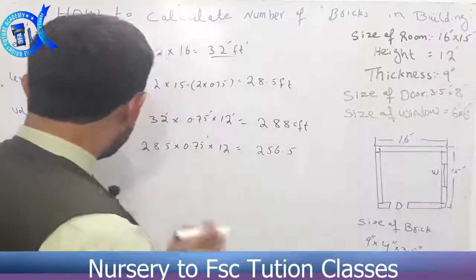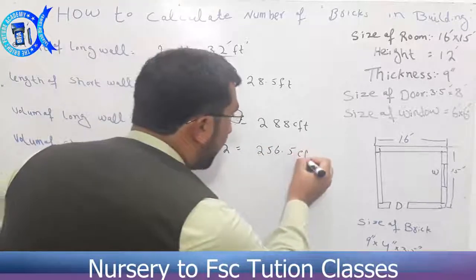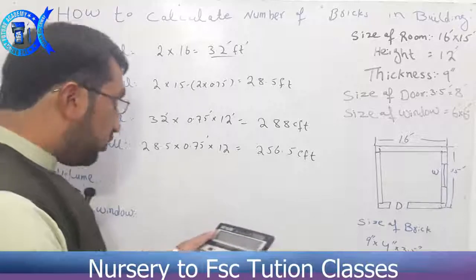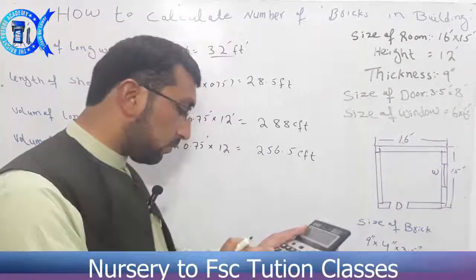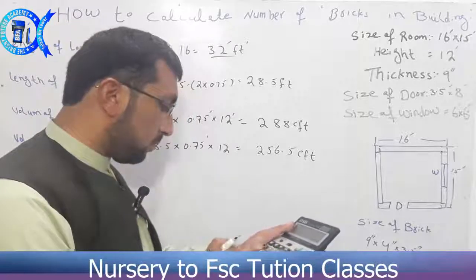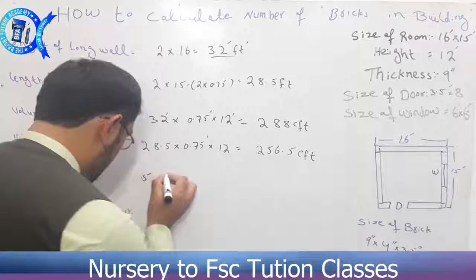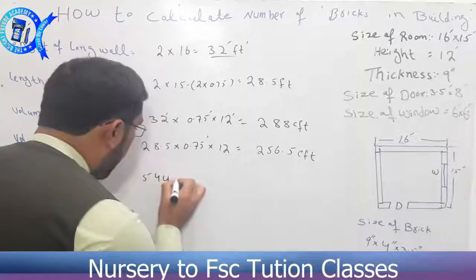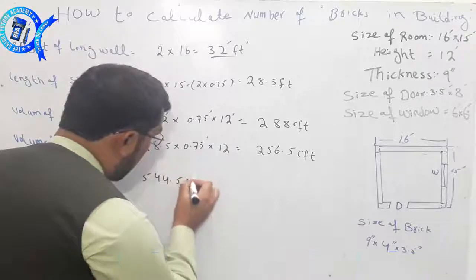What is the total volume? The total wall volume is 545 cubic feet.